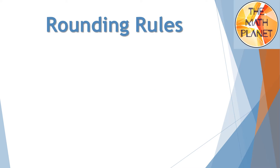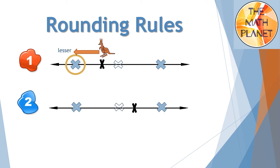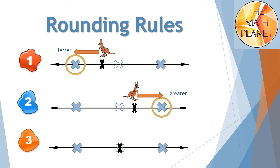The rules for rounding are: Rule 1 — if your number is located closer to the lower benchmark, round it down to the lesser number. Rule 2 — if your number is located closer to the upper benchmark, round it up to the greater number. Rule 3 — if your number is exactly at the halfway number, you will also round it up to the greater number. Hope you got it — now let's solve one more example.